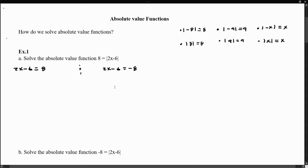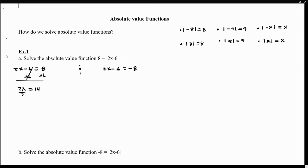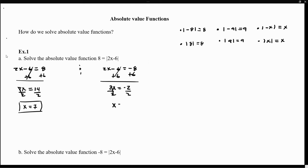So let's solve the left-hand side. We add 6, giving us 2x equals 14, then divide by 2 to get x equals 7. So one solution is x equals 7. Now for the other equation, we add 6 to negative 8, giving negative 2 divided by 2, so x equals negative 1. For this absolute value function we got two solutions: x equals 7 and x equals negative 1.